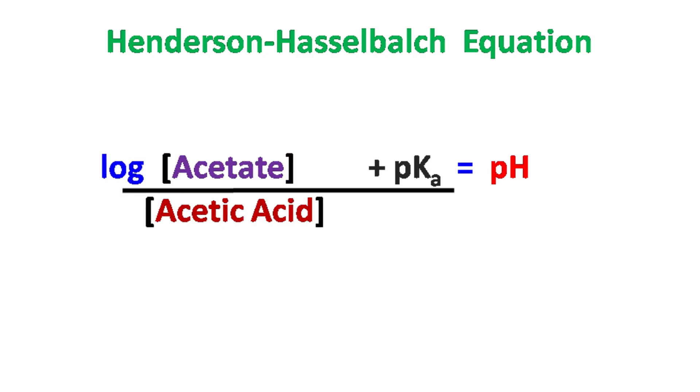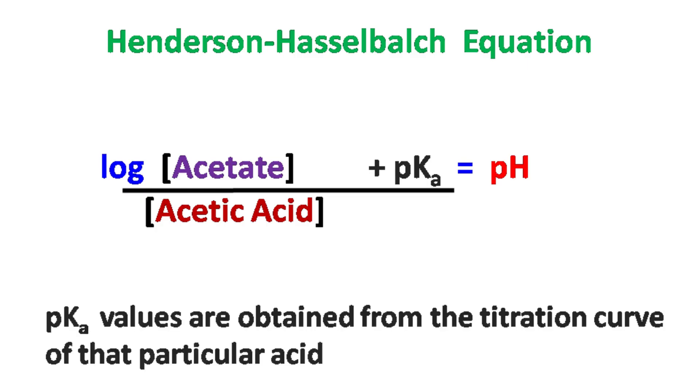For example, the proton donor can be acetic acid which donates H+ ions when added to water whereas proton acceptor present in aqueous solution is the acetate. And the pKa value of acetic acid can be obtained by the titration curve.